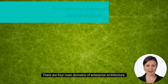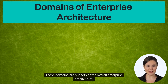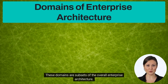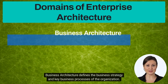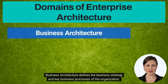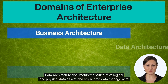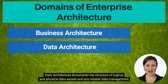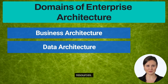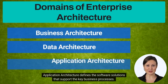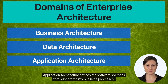There are four main domains of enterprise architecture. These domains are subsets of the overall enterprise architecture. Business architecture defines the business strategy and key business processes of the organization. Data architecture documents the structure of logical and physical data assets and any related data management resources. Application architecture defines the software solutions that support the key business processes.